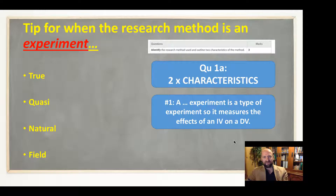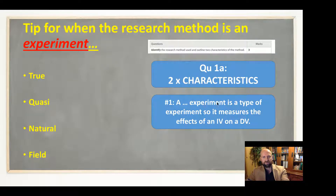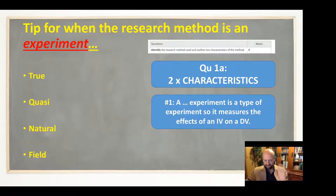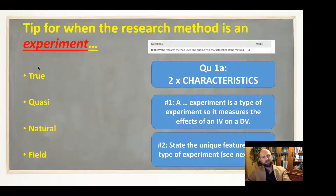Here's my tip: if it's an experiment, the first characteristic is that it has an IV and a DV. So your first sentence could be something like, 'The research method used was a true experiment. A true experiment is a type of experiment, so it measures the effects of an IV on a DV.' Or for a field experiment: 'A field experiment is a type of experiment, so it measures the effects of an IV on a DV.' This characteristic is shared by all four experiment types — the definition of an experiment is that it has an independent variable and measures the effects on a dependent variable.